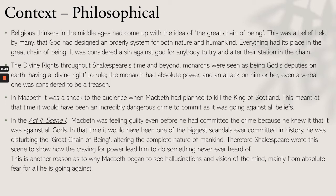Regarding philosophical context: religious thinkers in the Middle Ages came up with the idea of the Great Chain of Being — a belief that God had designed an orderly system for both nature and humankind. Everything had its place, and it was considered a sin against God for anybody to try and alter their station in the chain. Throughout Shakespeare's time and beyond, monarchs were seen as God's deputies on earth, having a divine right to rule. The monarch had absolute power, and an attack on him or her, even a verbal one, was considered treason.